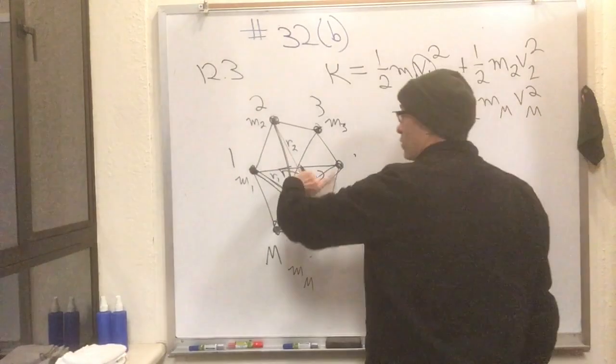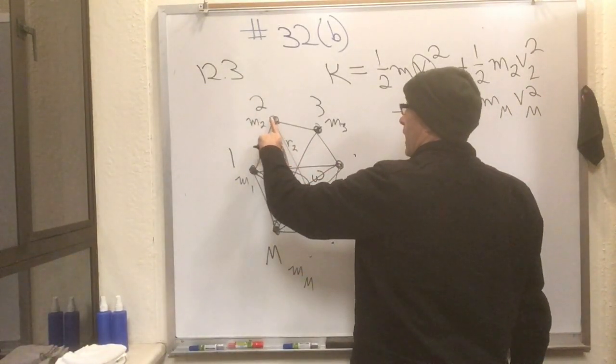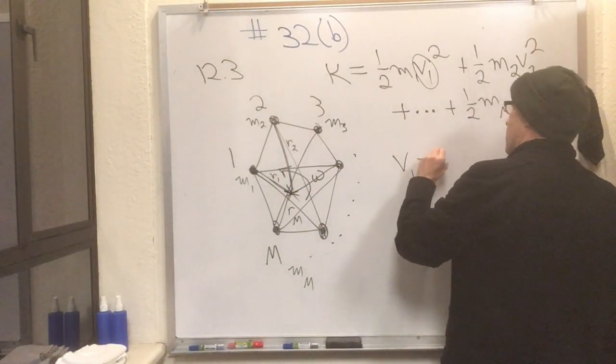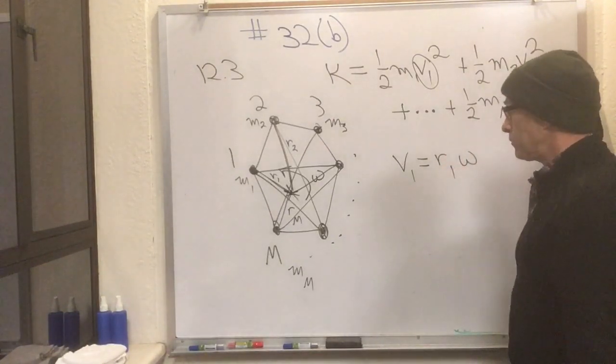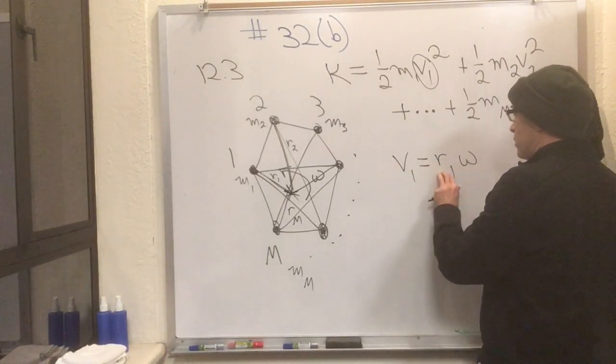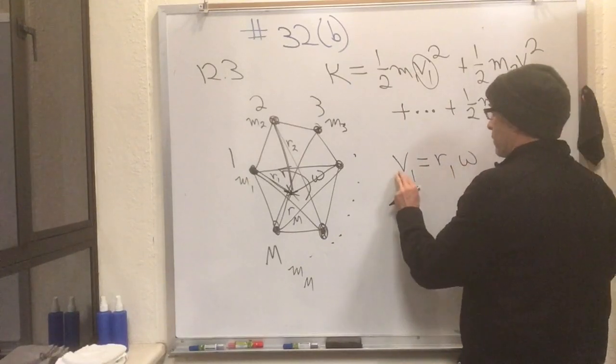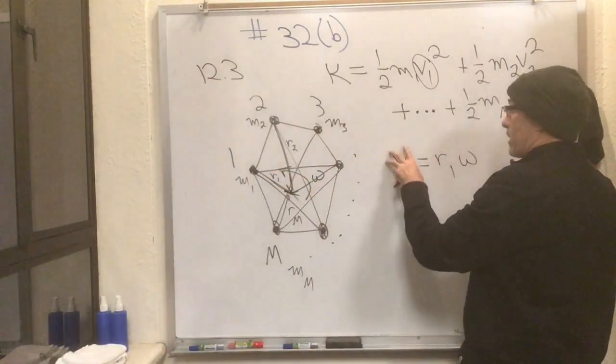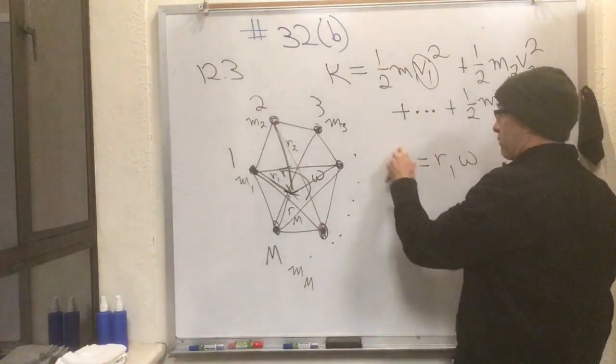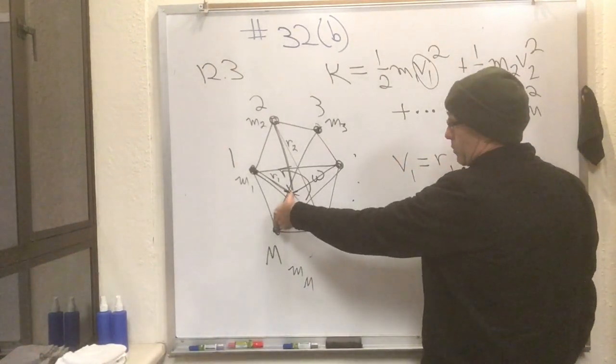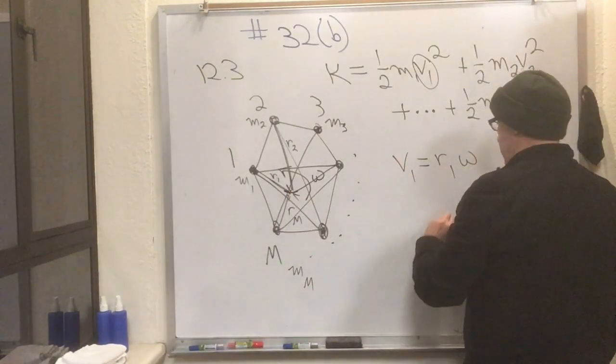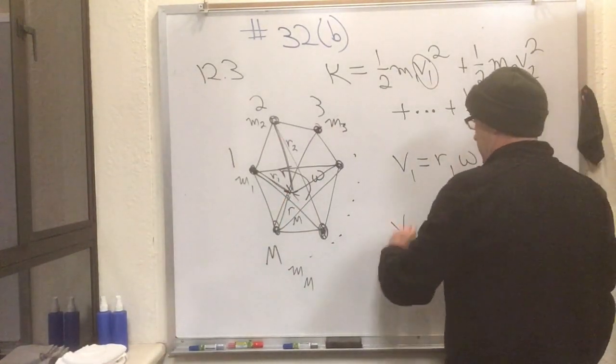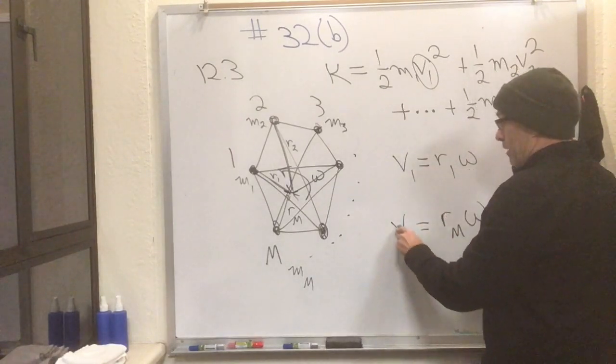Now there's a relationship between how fast the thing is going and this radius, and the relationship is that v1 is r1 omega. That just says that whatever omega is, you multiply it by r and you get the velocity. In this case it's r1, that radius, and you get velocity 1. And if it was a bigger radius, you'd get a bigger velocity. And if it's some smaller radius like this one down here, r sub m looks a little smaller than the others, it would still be multiplied by omega, but since r sub m is smaller, then v sub m is going to be smaller.